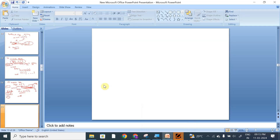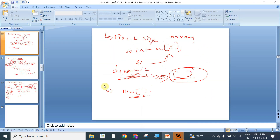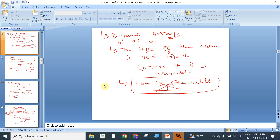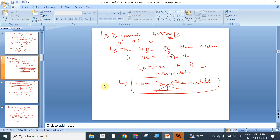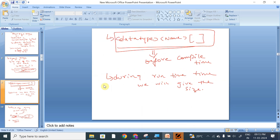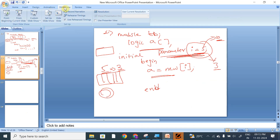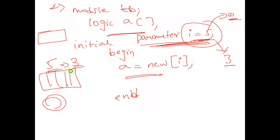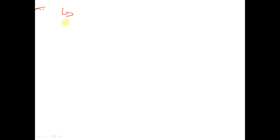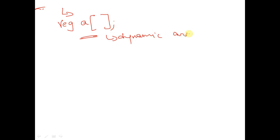We have started with dynamic arrays. In the previous session we discussed the syntax of dynamic arrays and how they are different from fixed size arrays. In this session we will give a brief brush-up on dynamic arrays and continue further. The syntax for a dynamic array is: data type, followed by any name of the array, followed by empty square braces.